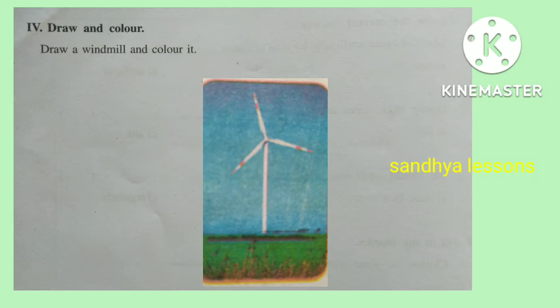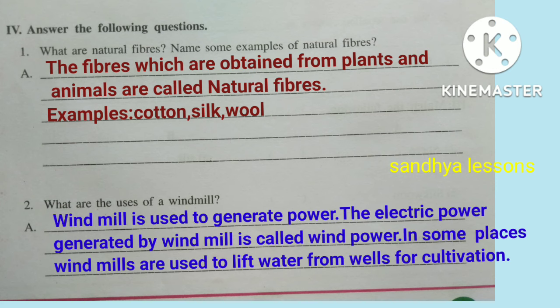Fourth, draw and color a windmill. Fifth, answer the following questions. What are natural fibers? Name some examples. The fibers obtained from plants and animals are called natural fibers. Examples: cotton, silk, wool. What are the uses of a windmill? A windmill is used to generate power. The electric power generated by a windmill is called wind power. In some places, windmills are also used for cultivation. Thank you for watching.